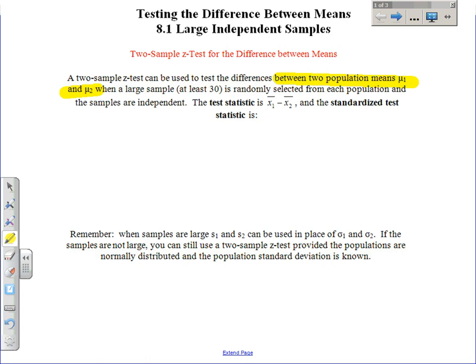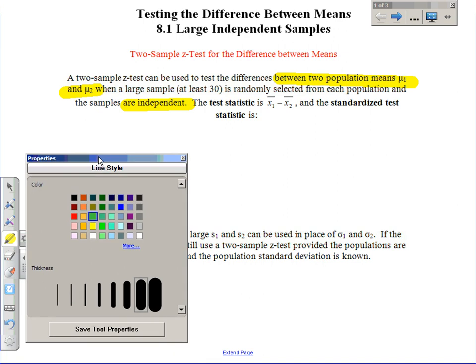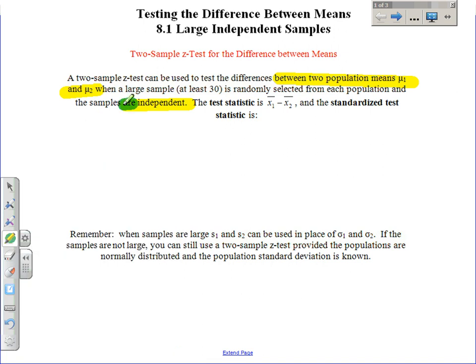When a large sample, again that means at least 30. So the first sample could be 60, the second sample could be 100, they don't even have to be the same. But what we want is they want them to at least be 30, randomly selected from each population. But again, here the samples need to be independent. I kind of showed you that with a picture yesterday. There's one amoeba-looking thing over here and one amoeba-looking thing over there, and you take your sample from each one. They don't have anything in common.